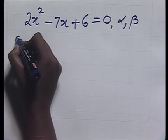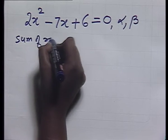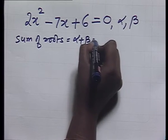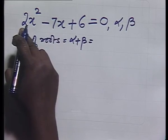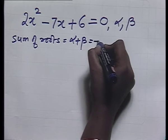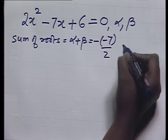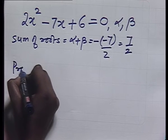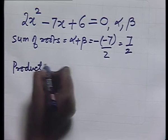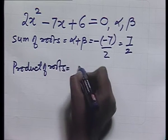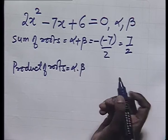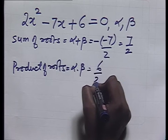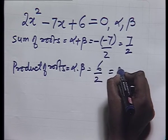Then the sum of roots of the given equation is α + β = -b/a = -(-7)/2 = 7/2, and the product of roots is α·β = c/a = 6/2 = 3.